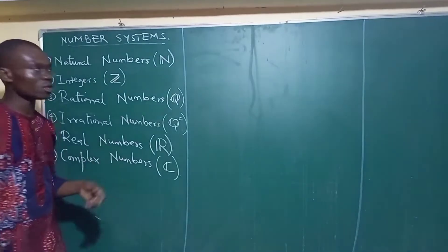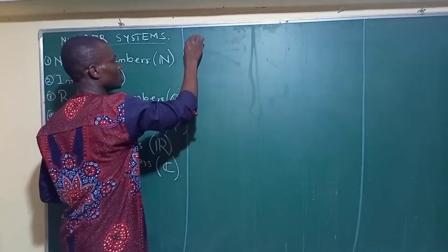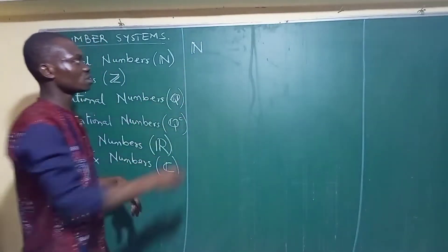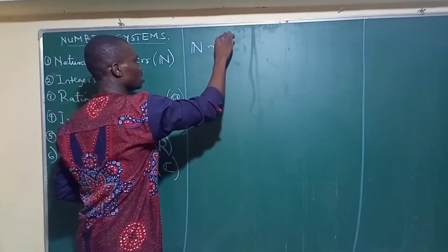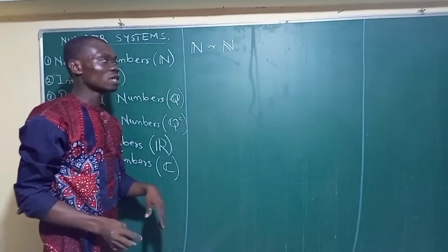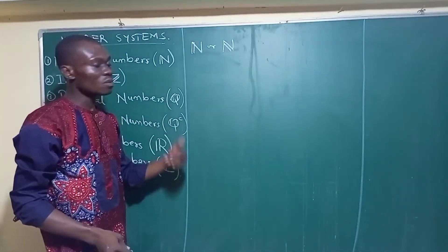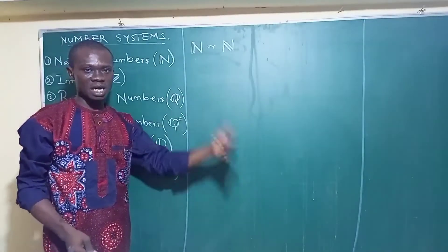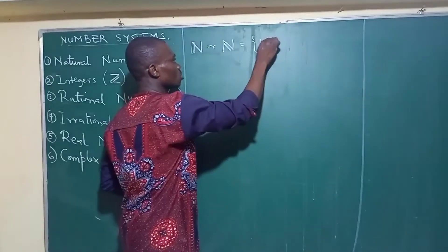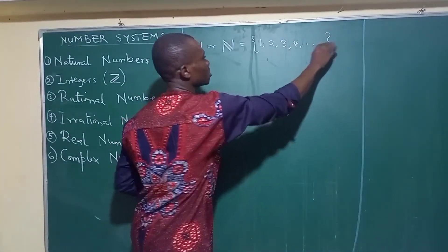So what are natural numbers? Natural numbers are numbers that we give the symbol N — we represent them like this, and sometimes we also write it another way. We say that these are the counting numbers, so they are the numbers that we make use of in counting, and they start from 1, 2, 3, 4, to positive infinity.